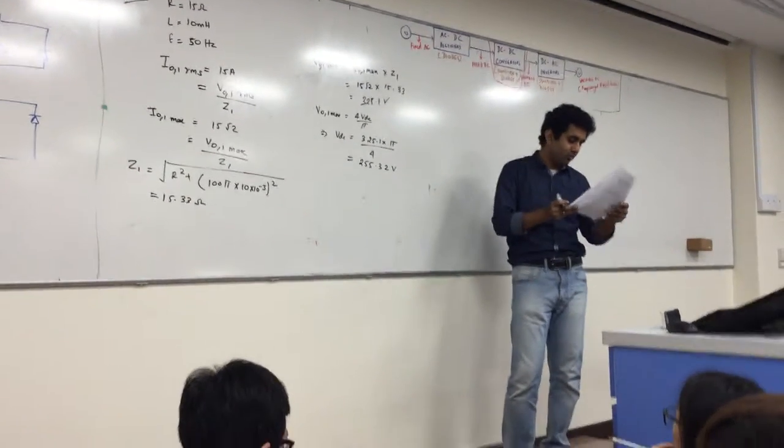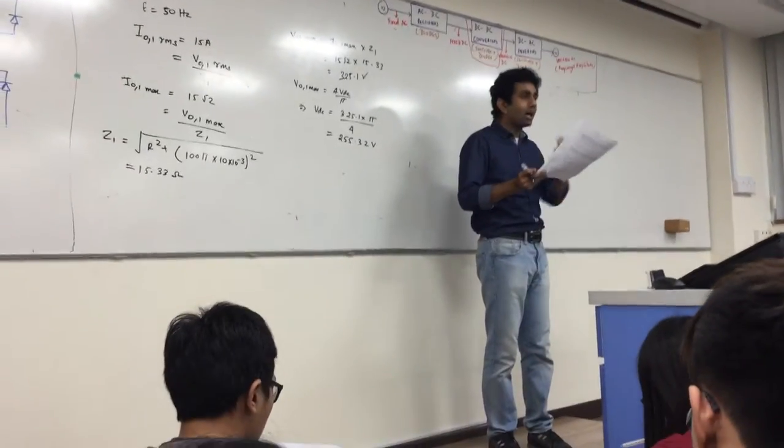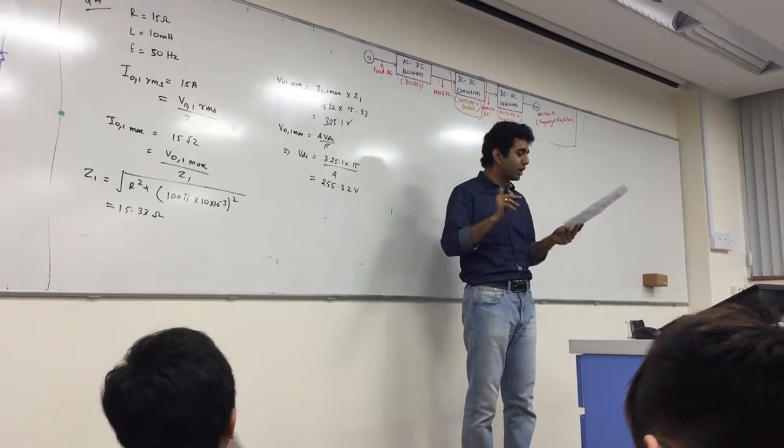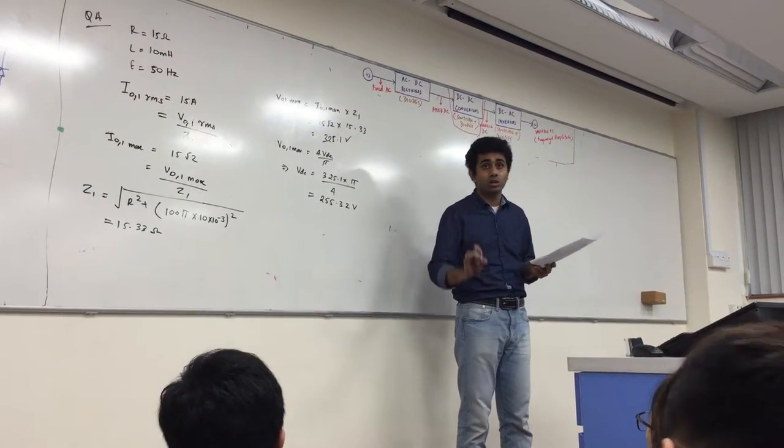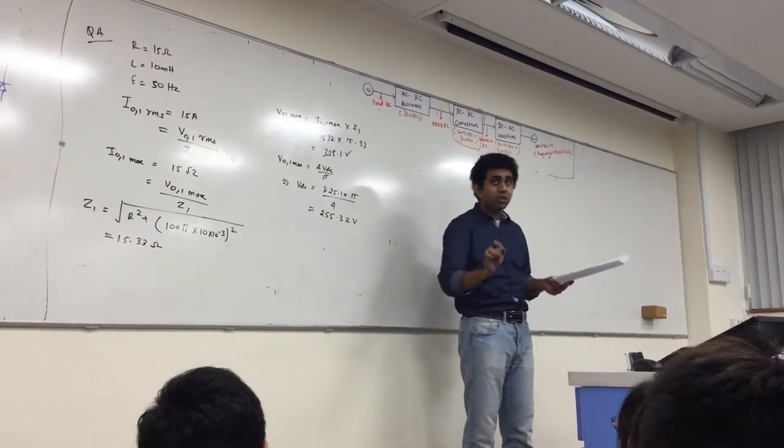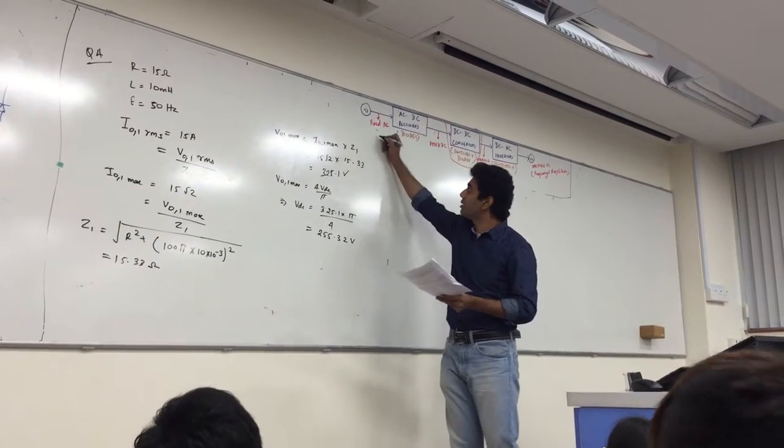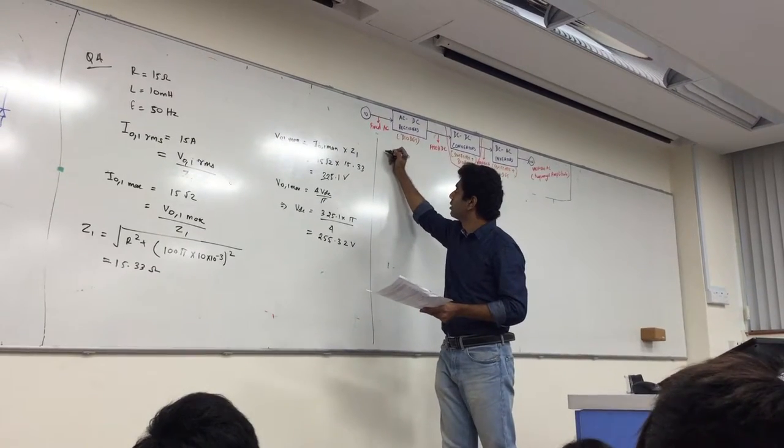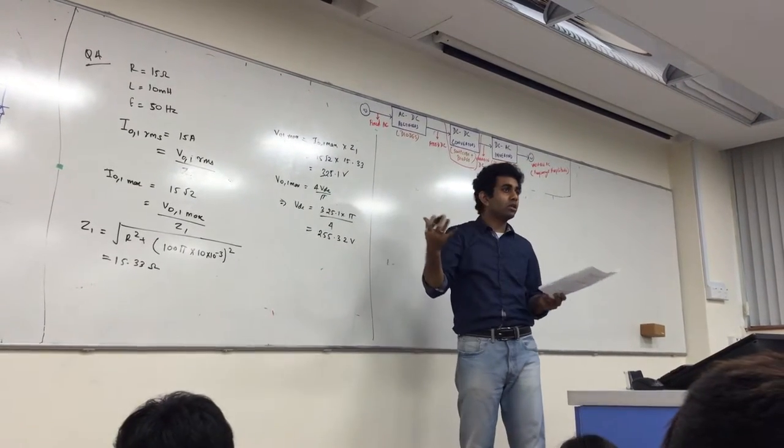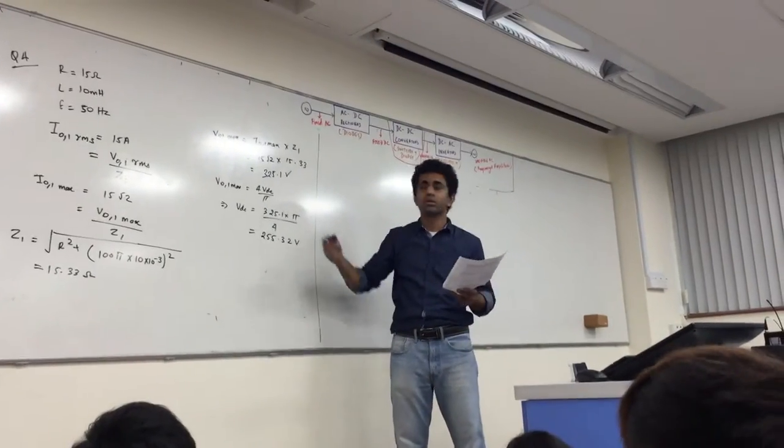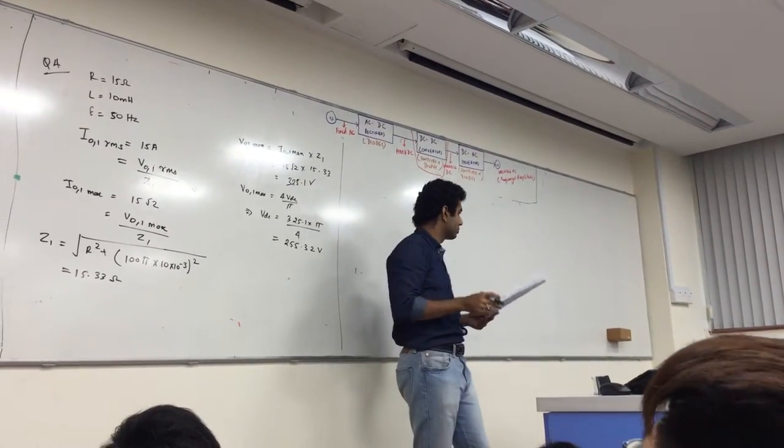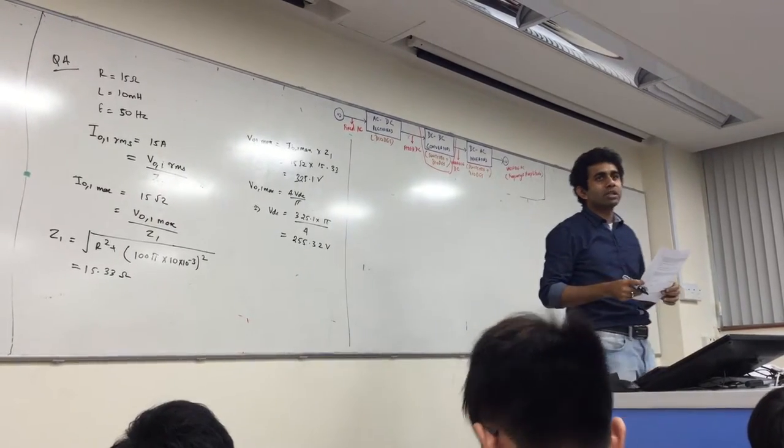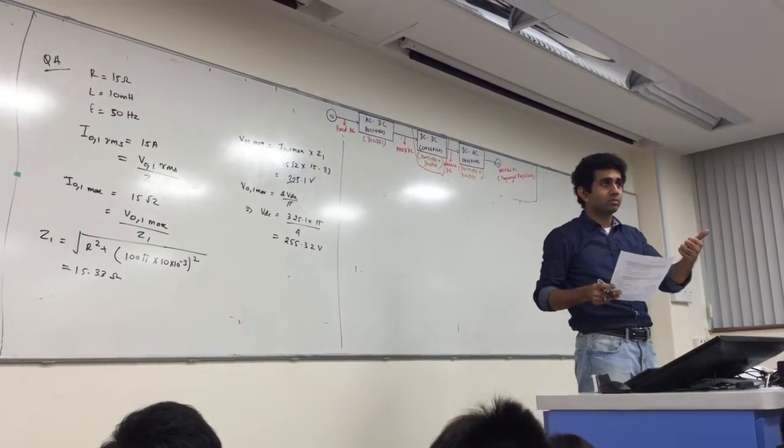What this literally means is, to get a fundamental current component of 15 amperes, my Vdc has to be 255.32 volts. What's the next part? Determine the total harmonic distortion of the load current, assuming the load current consists of harmonics up to and including the 5th order.